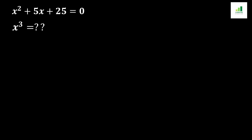Welcome to AMS. Today in this video we are going to solve a question. The given equation is x squared plus 5x plus 25 equal to 0, and our targeted value is x cubed. In order to find the value of x cubed, we will consider x squared plus 5x plus 25 equal to 0 as equation 1.